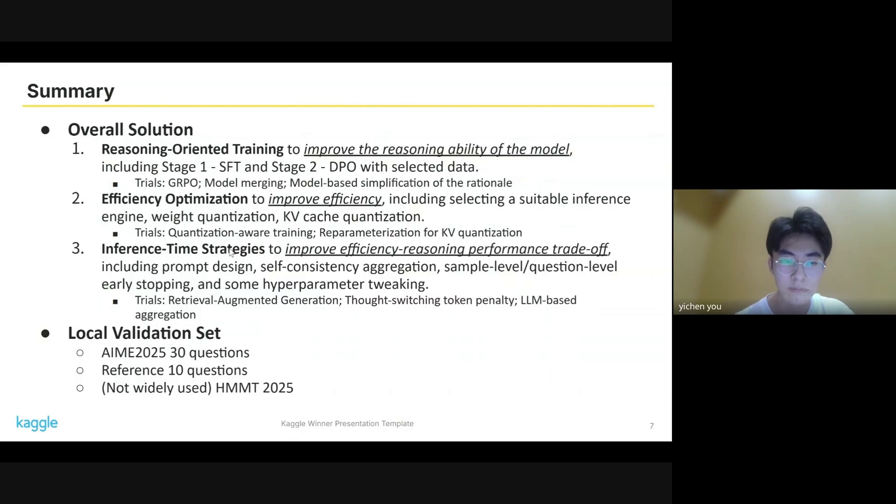The second section is efficiency optimization to improve efficiency, including selecting a suitable inference engine strategy with quantization and key-value cache quantization. And finally, the inference time strategies to improve efficiency-reasoning performance trade-off, which includes parameter design, self-consistency aggregation, sample-level and question-level early stopping, and some hyperparameter tweaking. The first two sections will be delivered by myself and the last section will be delivered by Xu Feining.